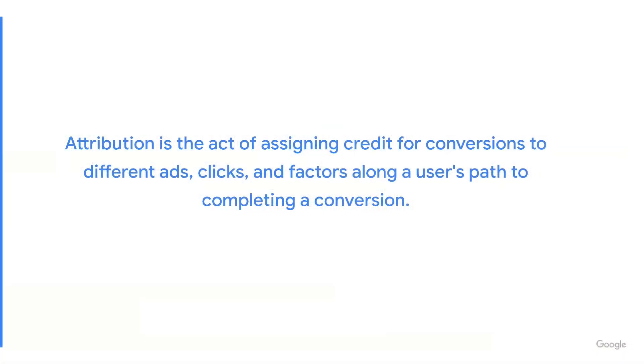I'm so excited to be here and to speak to all of you about attribution in Google Analytics 4 Properties. Let's go ahead and jump in. Attribution is the act of assigning credit for conversions to different touchpoints in a user's path to completing a conversion. An attribution model can be a rule, a set of rules, or a data-driven algorithm that determines how credit for conversions is assigned to touchpoints on conversion paths.